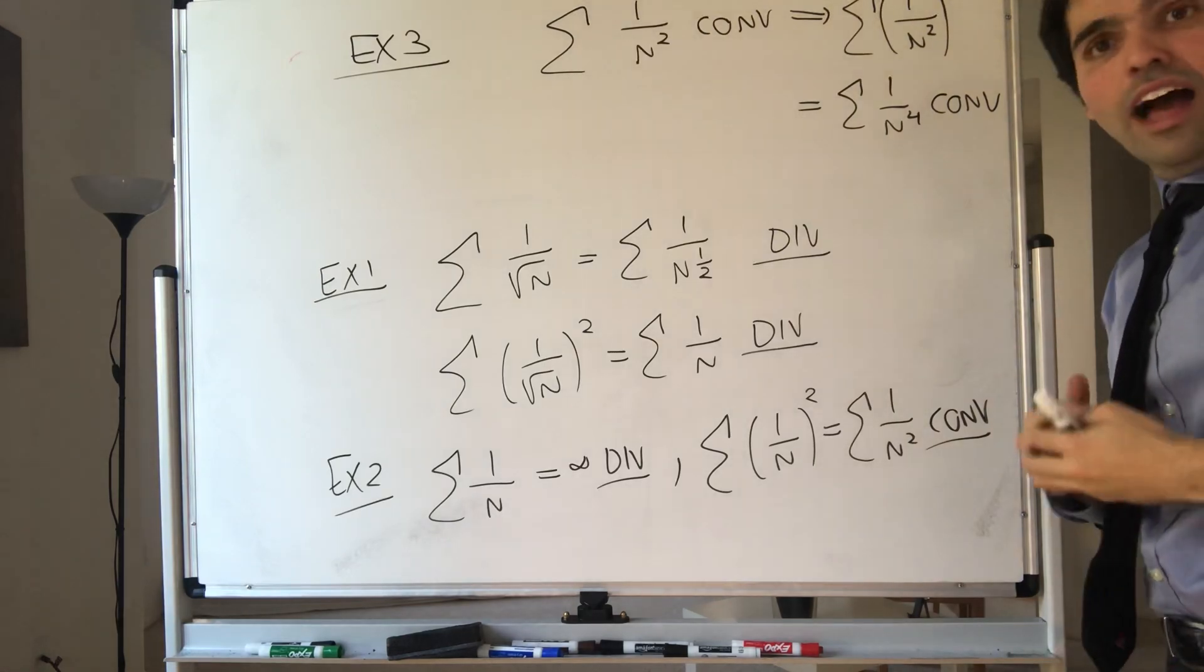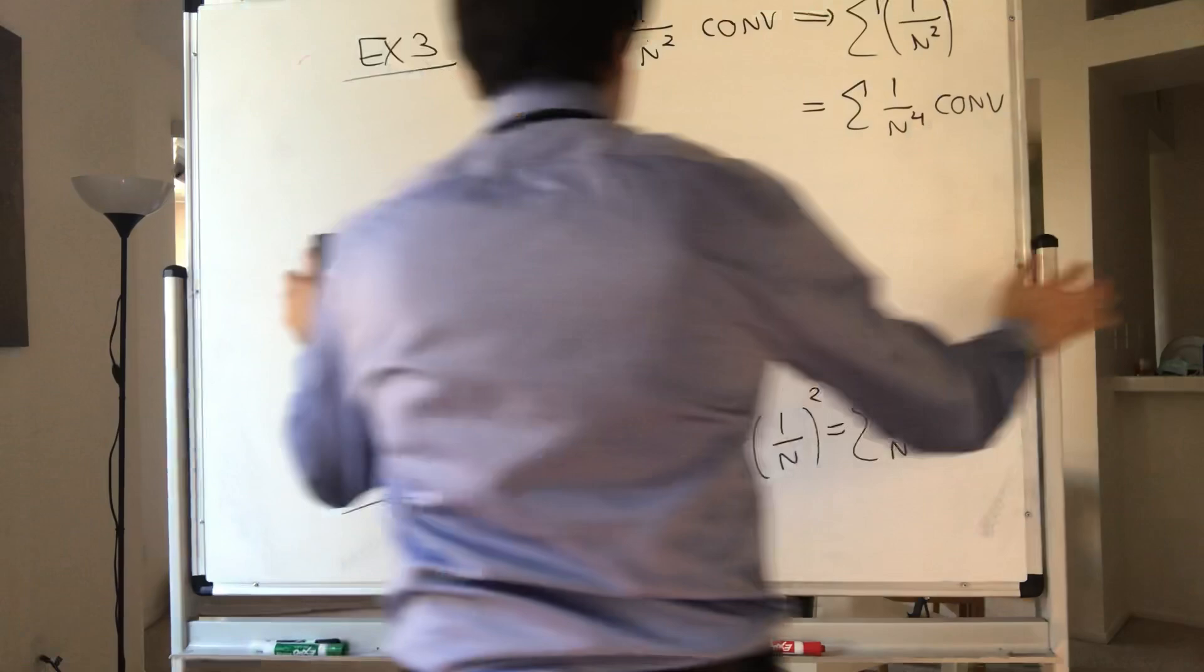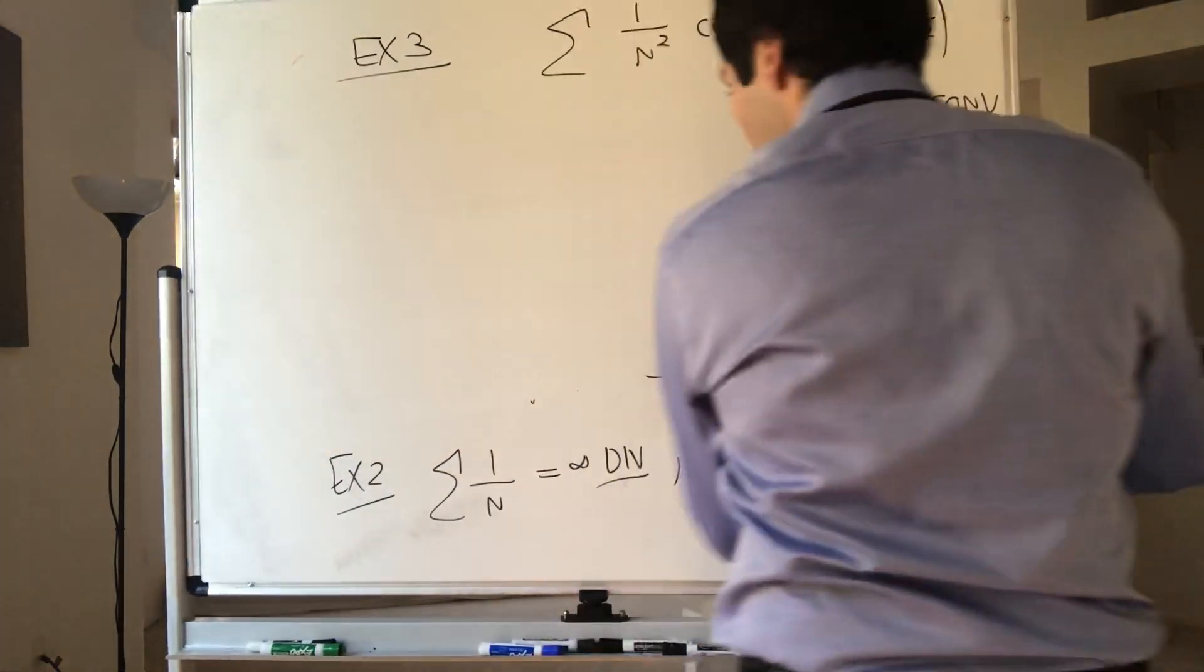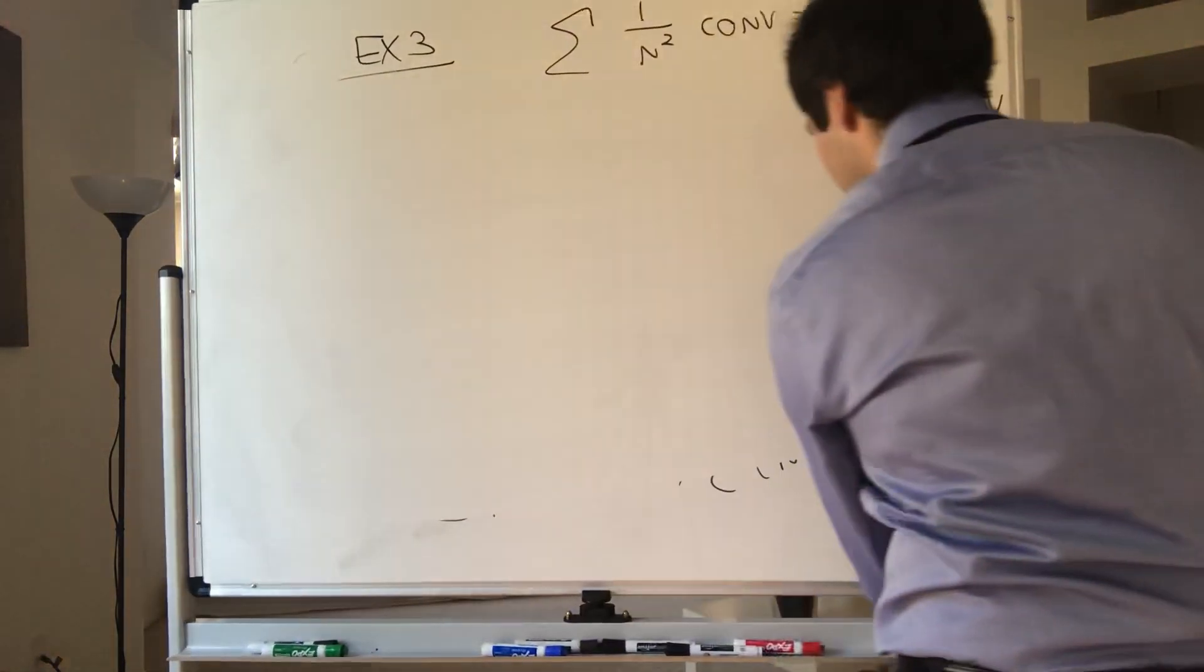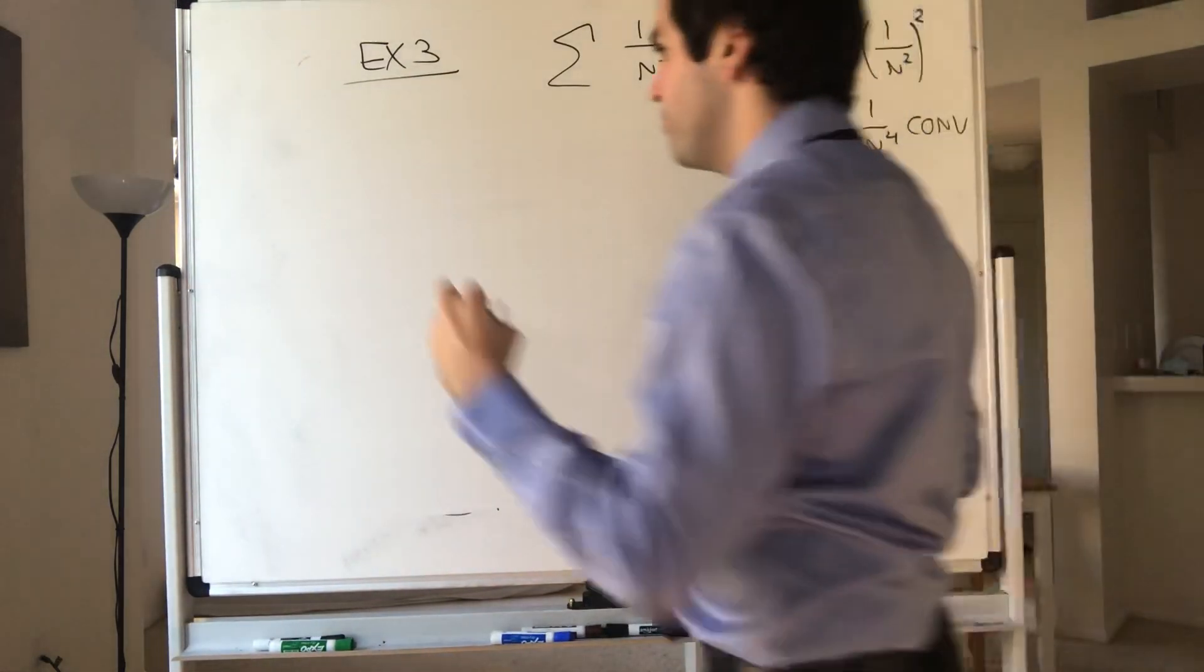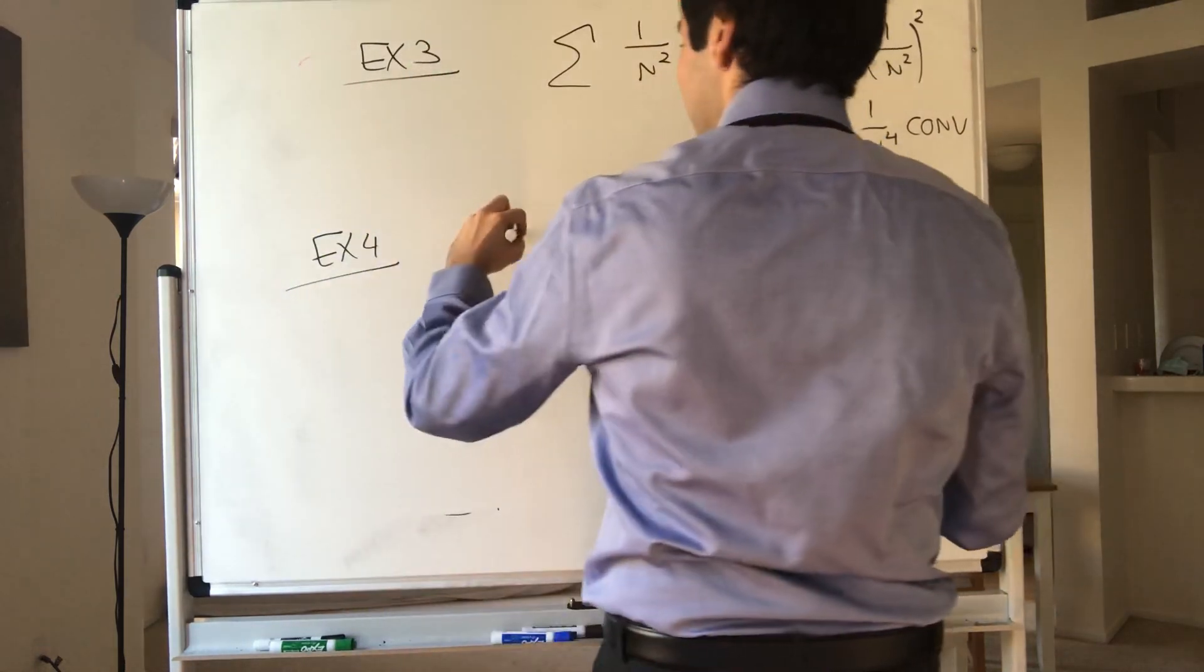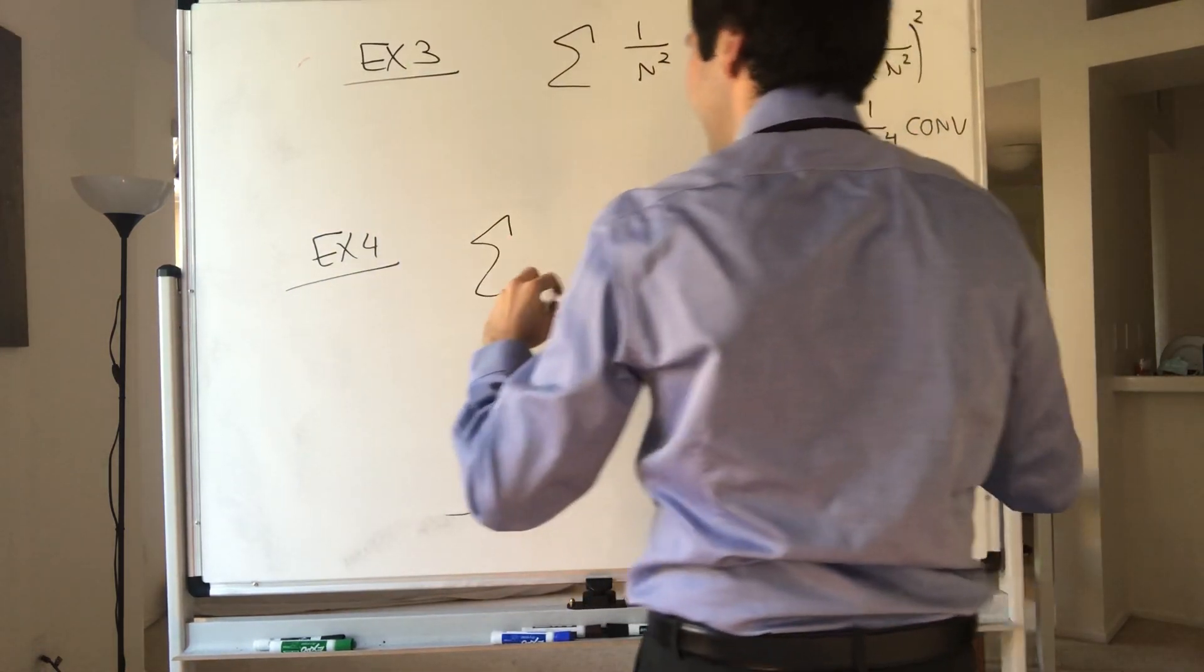However, you could also have another scenario, where one converges and the other one diverges. Because for instance, consider the following series. In this case, we have to go alternating, you'll see why.